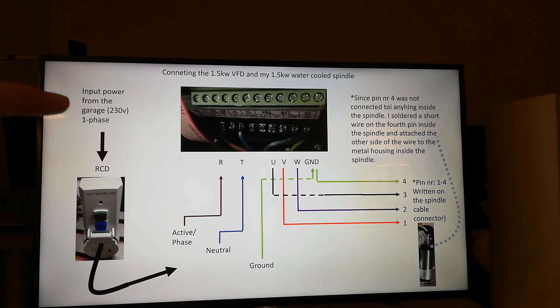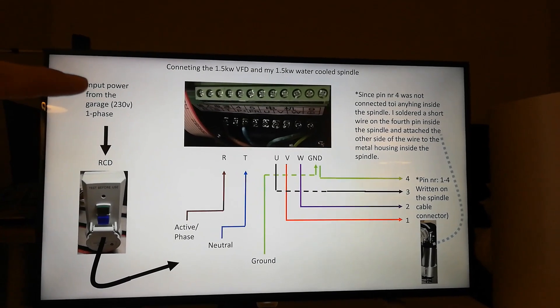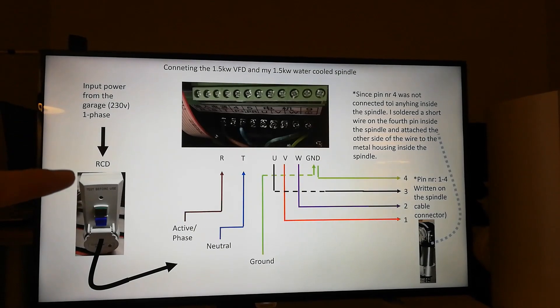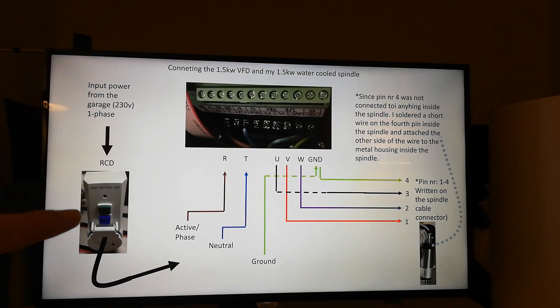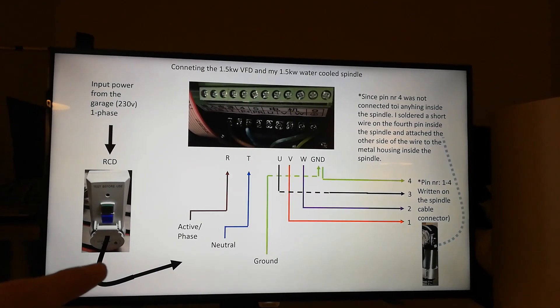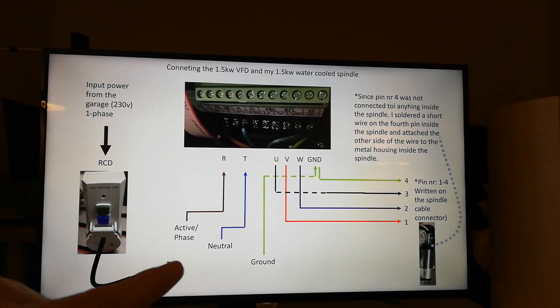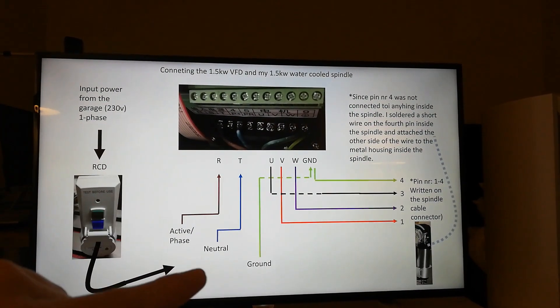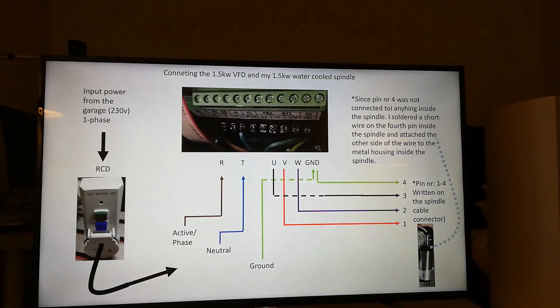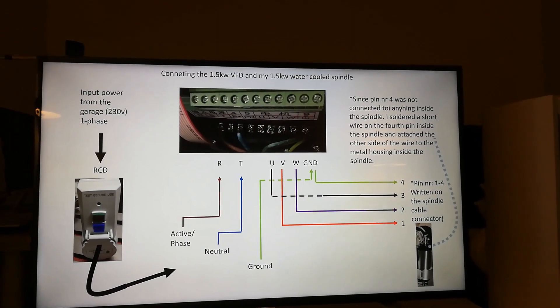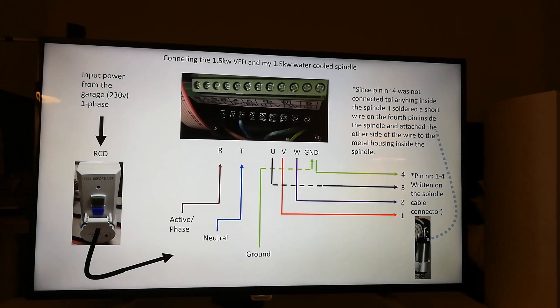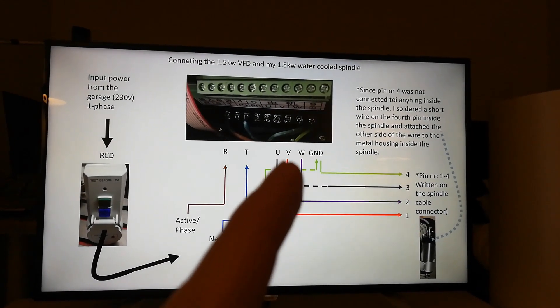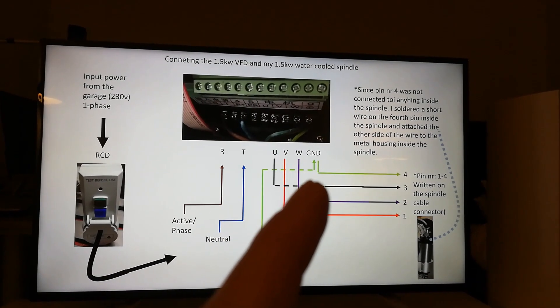If we start up here I have 220 to 230 voltage in the garage, one phase. Since the garage didn't have an RCD I bought one just to be safe. From the power here I connected the phase or active to R, neutral to T and ground to ground. That's pretty straightforward. To connect the spindle to the VFD I connected pin number one to V, pin number two to W and pin number three to U.